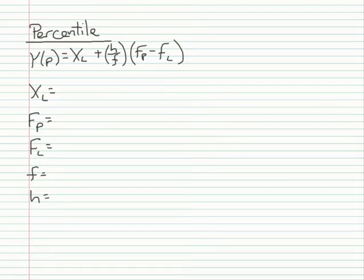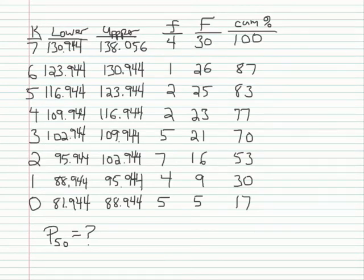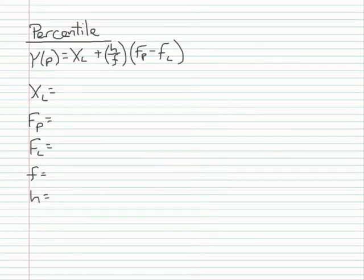To solve this equation, you need to find various terms. I'm going to start with x sub l, which is the value of the lower bound of the interval containing the percentile point. To find x sub l, I need to find the interval containing the percentile point. If I look at the cumulative percentage, I need to find the one that has 50% in it. The second interval goes up to 30%, and the third interval goes up to 53%, so my 50th percentile is going to be in that interval. I need the lower bound of that interval, and you can see it's 95.944. So x sub l is going to be 95.944.